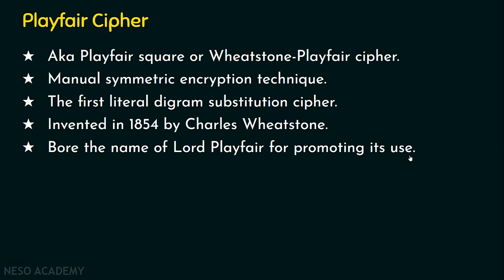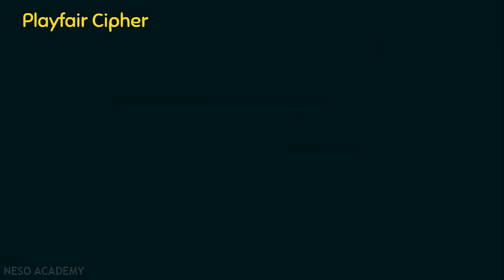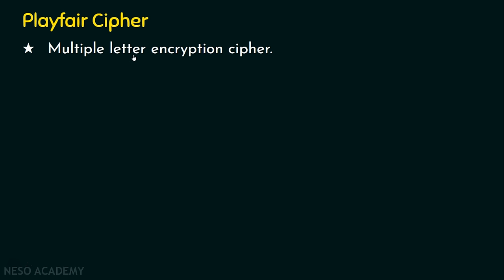Basically, Playfair Ciphering is a multiple letter encryption technique — not single letter. Let's compare with previous techniques like Caesar Cipher, Shift Cipher, or mono-alphabetic cipher. In those, if A is replaced by M, then wherever A appears in the plain text, M will always be the ciphertext character throughout the message. Similarly, if plain text letter D is encrypted as Z, then throughout the message, wherever D appears, Z will be the ciphertext letter.